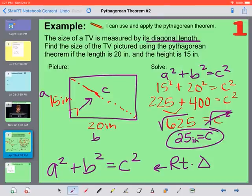So in the store, it would say that this is a 25-inch TV, even though it's not straight across. It's a diagonal length.